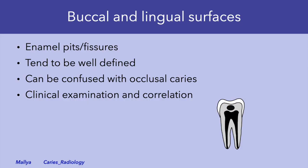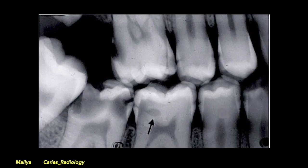Consider caries that occurs in the pits and fissures on the buccal and lingual surfaces of teeth. Due to superimposition, these caries lesions may mimic occlusal caries lesions on radiographs. Correlation of your radiographic findings with clinical information will help you make this distinction. This example demonstrates buccal caries that is superimposed over a proximal caries lesion. Remember that on the radiograph alone, you will not be able to determine the buccal or lingual nature of the radiolucency; however, that information is accessible to you clinically.